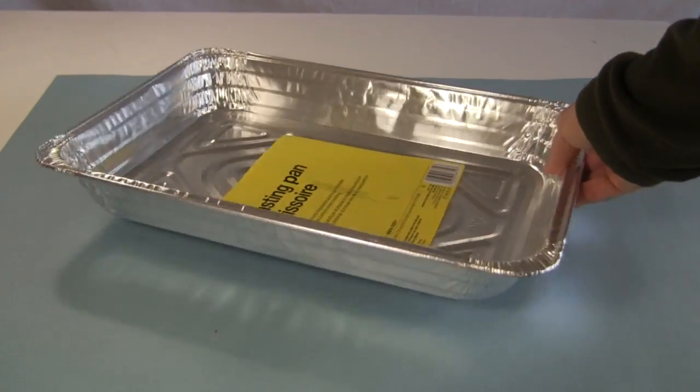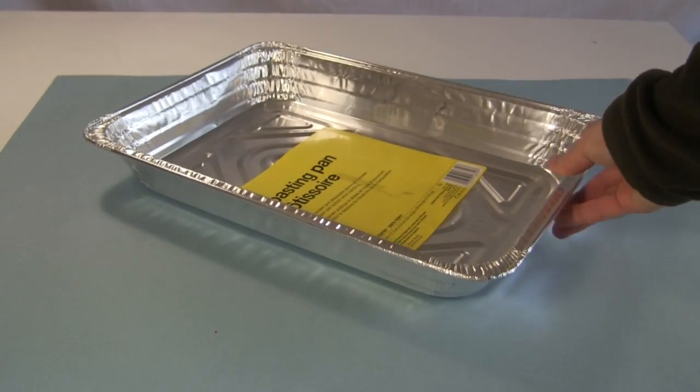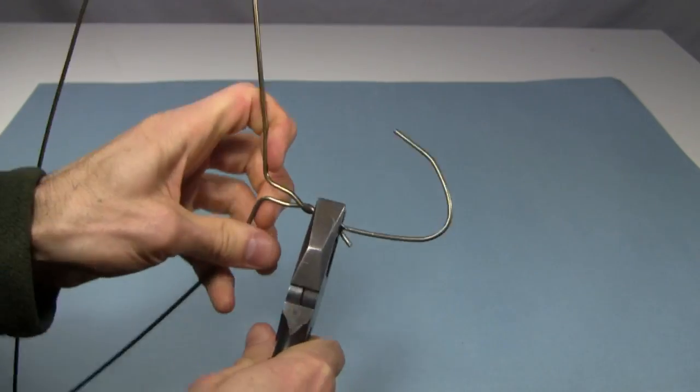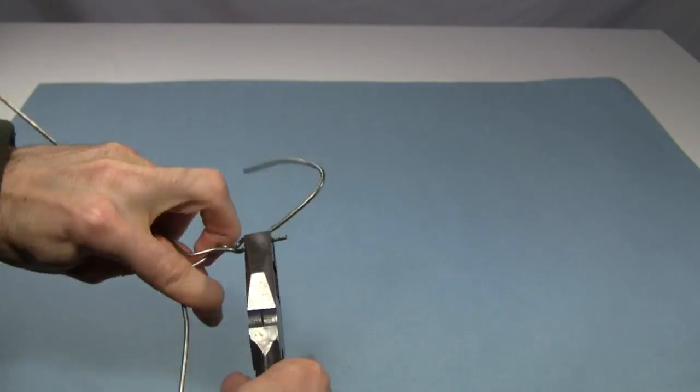To make them, I'll use this thin aluminum roasting pan for the electrodes. I'll use this clothes hanger wire for structural support and to conduct electricity to the electrodes. I'll start by bending the wire.